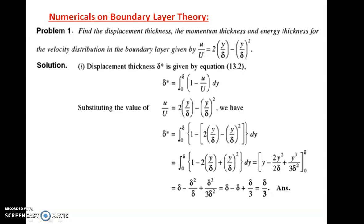It is the same velocity profile we are going to use. The boundary layer is expressed in terms of velocity inside that boundary layer, and that velocity is expressed as a function of y — the distance in the perpendicular direction — where U is the free stream velocity and δ is the boundary layer thickness. The numericals are very simple because there is only a formula and you have to put the values in.